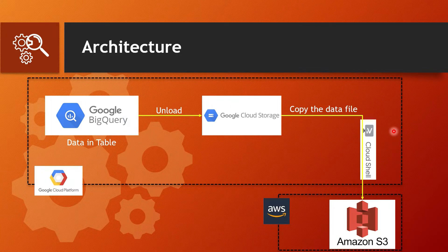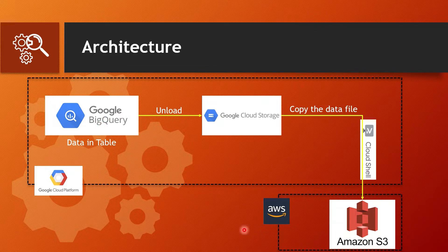Here is how we can do this: first, we have data in a BigQuery table, and we need to unload that data into Google Cloud Storage. There are no direct connectors available from BigQuery to S3, so we unload into Google Cloud Storage and then copy that data file from Cloud Storage to S3 using Cloud Shell.